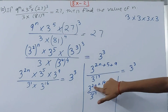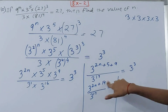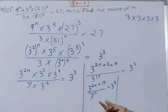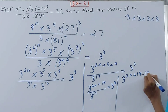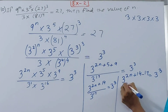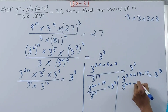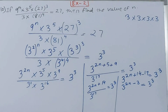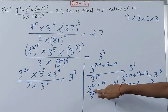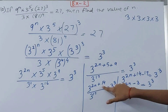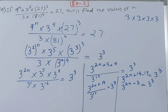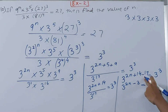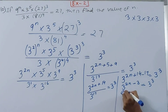Now we take the denominator exponent up — it subtracts. So we get 3 to the power 2n plus 14 minus 17, equal to 3 cubed. That gives us 3 to the power 2n plus 14 minus 17, which becomes 2n minus 3, equal to 3 cubed. We got 2n plus 14 from 5 plus 9 equals 14, and 17 from 1 plus 16 in the denominator, which we have now subtracted.